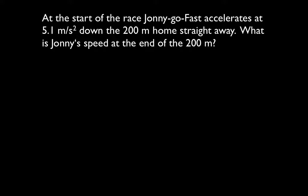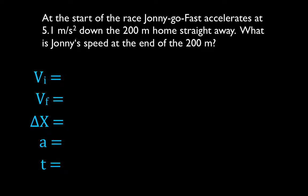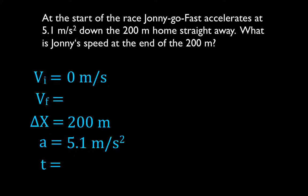Now we have Johnny Go Fast. He's at the start of the race, and he's going to accelerate at 1.5 meters per second squared down the home straightaway. We want to know what is Johnny's speed at the end of the 200-meter straightaway. Write down all five variables. At the start of the race, the car is not moving, so the initial velocity is 0 meters per second. We're given the acceleration and the distance of 200 meters, and we're solving for the final velocity. We are not given the time, so we'll ignore it for this problem.